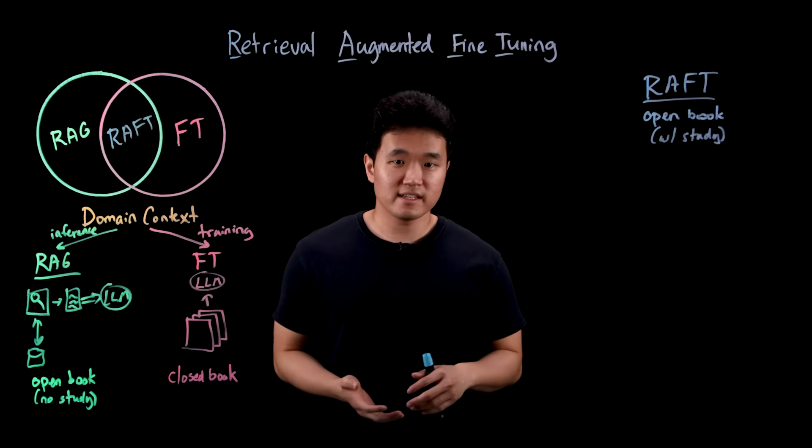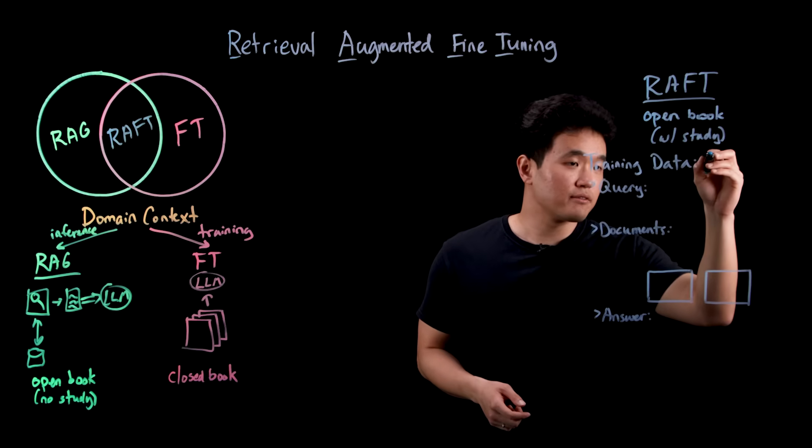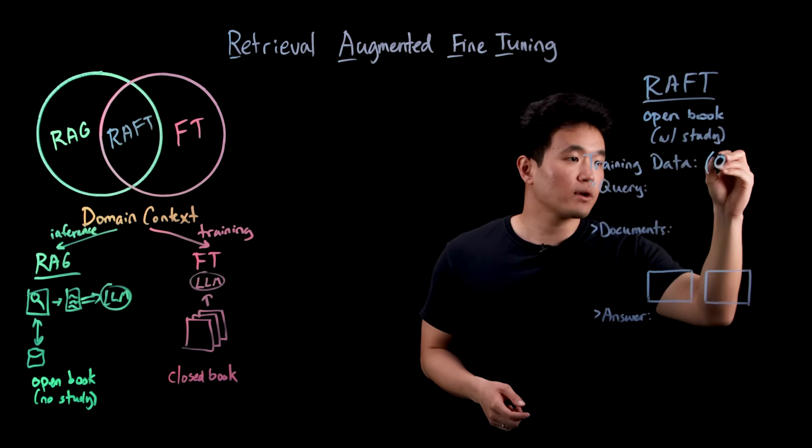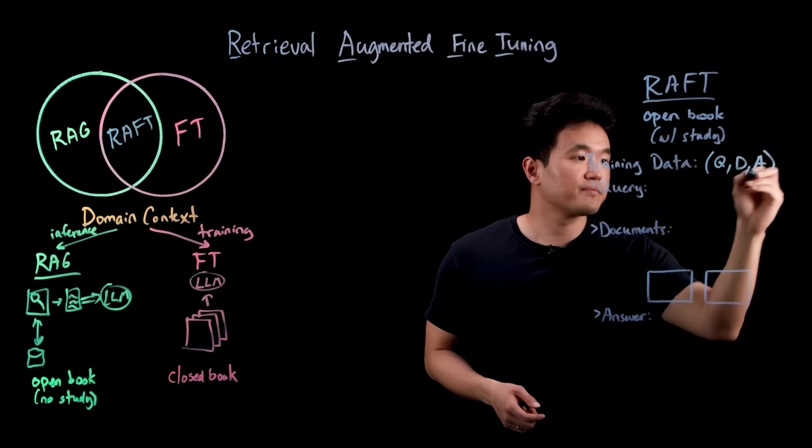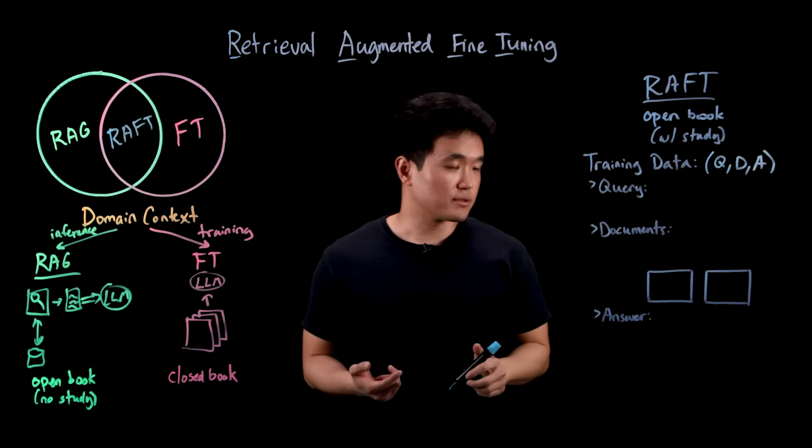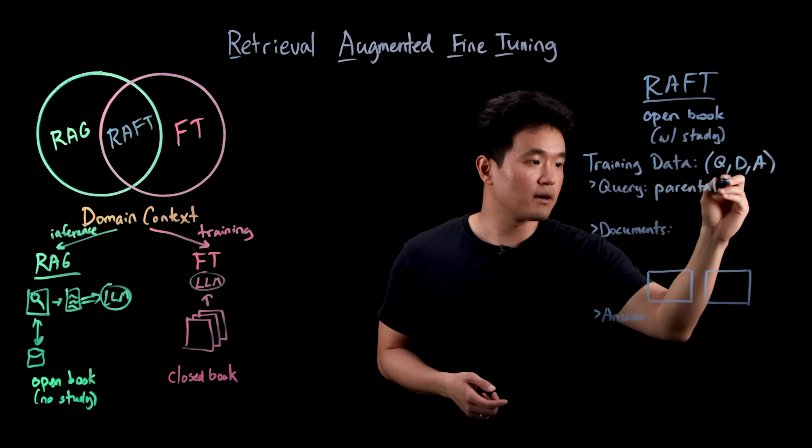Since RAFT is a training technique, we need training data. Each data point will consist of three things: a query, a set of documents, and an answer. Let's look at an example. Let's say our query is, how much parental leave does IBM offer?